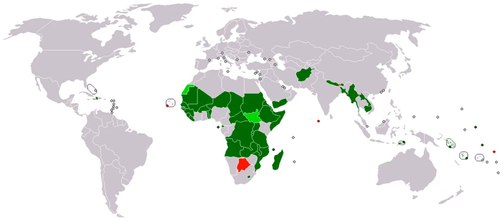Developing countries with the highest rate of women who have been cut include Somalia, Guinea, Djibouti, Egypt, Eritrea, Mali, Sierra Leone, Sudan, Gambia, Burkina Faso, and Ethiopia. Due to globalization and immigration, FGM is spreading beyond the borders of Africa and the Middle East, to countries such as Australia, Belgium, Canada, France, New Zealand, the US, and UK. The Istanbul Convention prohibits female genital mutilation, and as of 2016, FGM has been legally banned in many African countries.